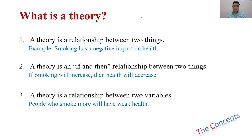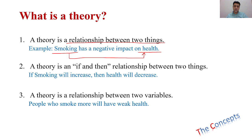When we look at the simple definition of a theory, a theory is a relationship between two things. For example, smoking has a negative impact on health. Health is one thing, smoking is the other thing, and we are trying to establish a relationship between smoking and health. This can be a simple example of a theory.